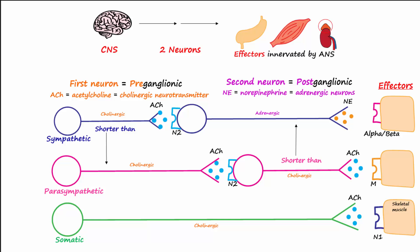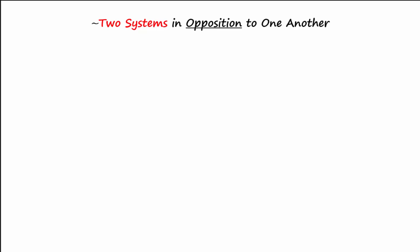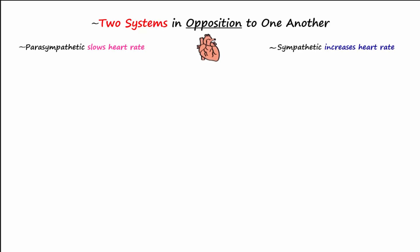Epinephrine, also known as adrenaline, is released from the adrenal gland and also binds to and activates adrenergic receptors on effectors. Remember that the actions of the parasympathetic and sympathetic systems are in opposition to one another — for example, with the heart, the parasympathetic system slows heart rate and the sympathetic system increases heart rate.